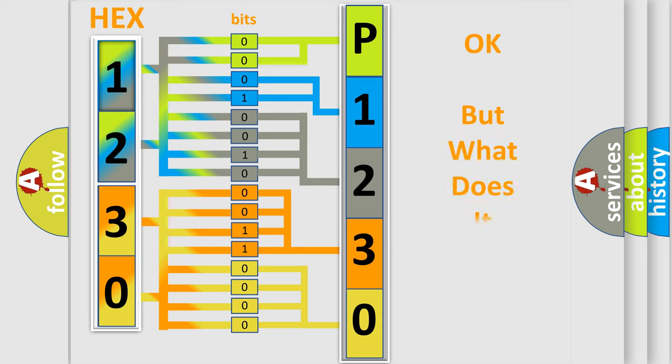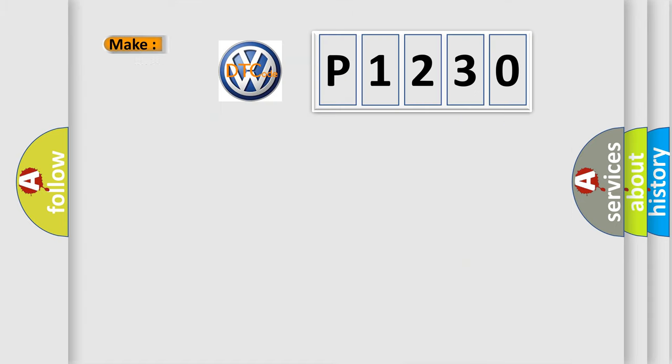We now know in what way the diagnostic tool translates the received information into a more comprehensible format. The number itself does not make sense to us if we cannot assign information about what it actually expresses. So, what does the diagnostic trouble code P1230 interpret specifically for Volkswagen car manufacturers?